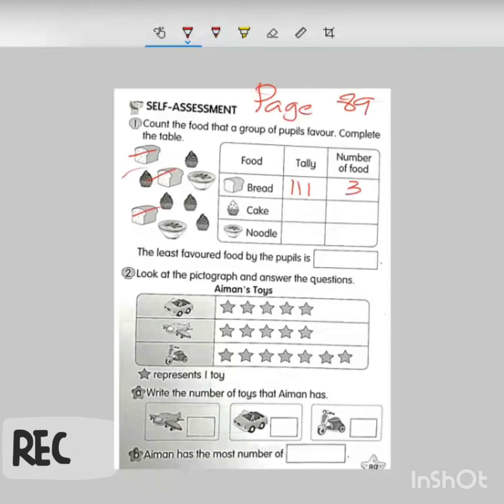How about the cake? How many cakes? One, two, three, four, five. Need to remember this one. One, two, three, four, five. So the number is five.